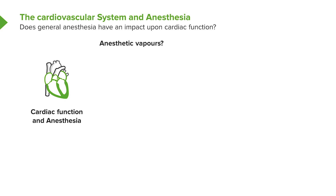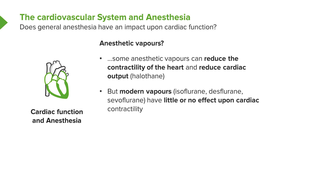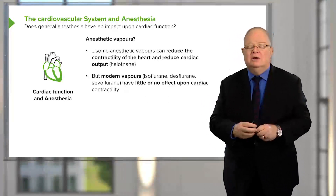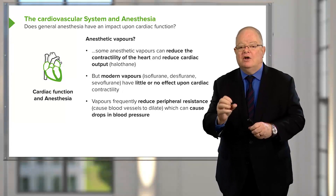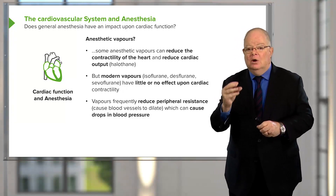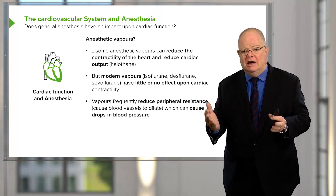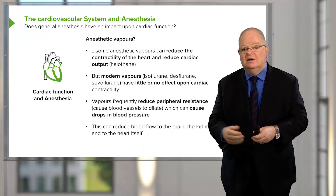Does general anesthesia have an impact upon cardiac function? Some anesthetic vapors can reduce the contractility of the heart and reduce cardiac output — these tended to be older vapors such as halothane, but modern vapors such as isoflurane, desflurane, and sevoflurane have little or no effect upon cardiac contractility. They do have an impact upon peripheral resistance, which is the resistance against which the heart has to work. Low peripheral resistance may result in low blood pressure, but may also allow the heart to contract more fully. If you reduce blood flow too much, you can reduce it to the brain, the kidney, and the heart itself.